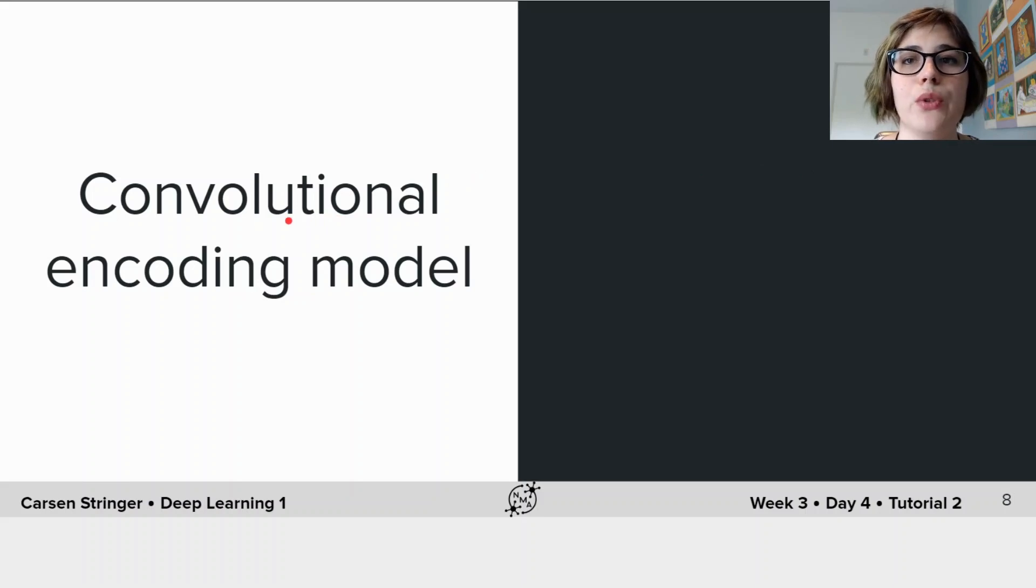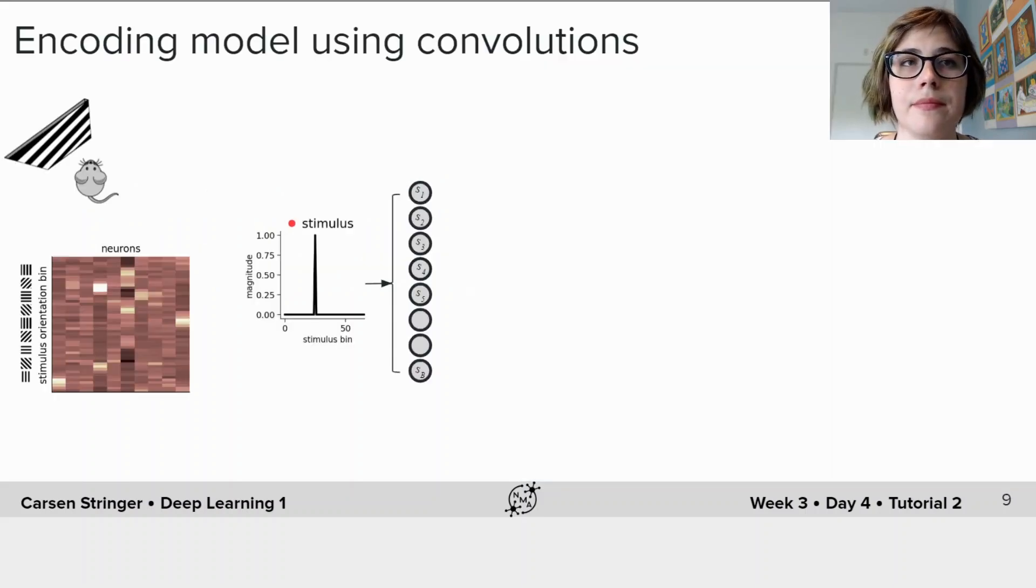All right, so now let's build our convolutional encoding model. We're going to put these convolutions together with a fully connected layer and create an encoding model.